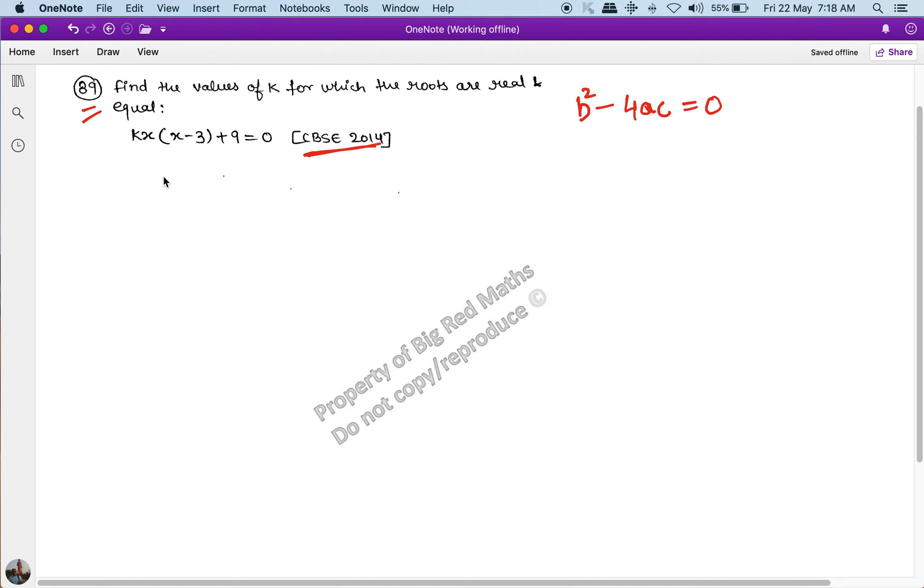The condition is that b²-4ac when equal to 0, this quadratic equation has real or equal roots. So let's solve it. We have kx² minus 3kx plus 9 equal to 0. If we compare this to ax² plus bx plus c equal to 0.